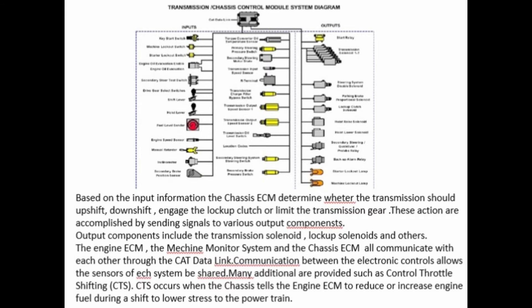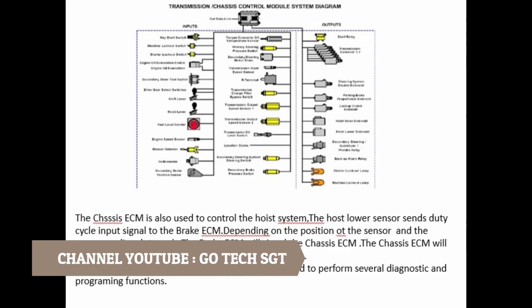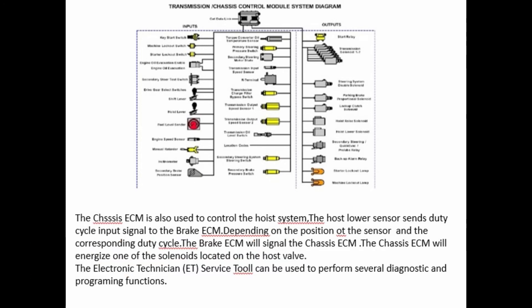Controlled throttle shifting, or CTS, occurs when the chassis ECM tells the engine ECM to reduce or increase engine fuel during a shift, to lower stress to the powertrain. The chassis ECM is also used to control the hoist system. The hoist lower sensor sends a duty cycle input signal to the brake ECM. Depending on the position of the sensor and the corresponding duty cycle, the brake ECM will signal the chassis ECM, which will then energize one of the solenoids located on the hoist valve.